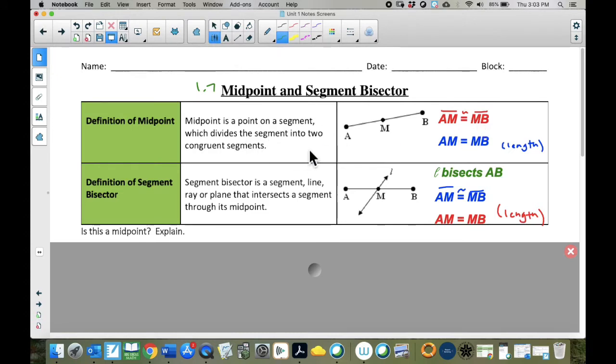A midpoint is just exactly what you think it is. It is a point on a segment which divides the segment into two congruent segments. They have to be equal to each other. If they're not equal, it's not actually a midpoint.